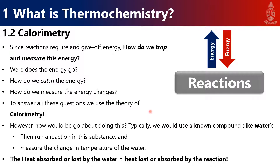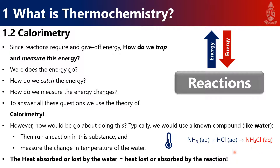Typically, we would take a known compound like water, for which we have a heat capacity, and run a reaction in that substance. For example, we have ammonia reacting with hydrogen chloride, which would form ammonium chloride. This is an exothermic reaction — there will be heat released during this reaction, so we go from colder conditions to hotter conditions. There would be a temperature increase during the reaction, and this temperature can be measured in the water.